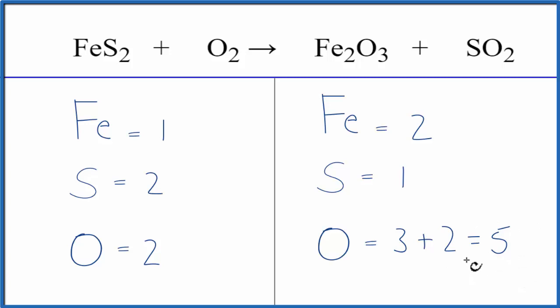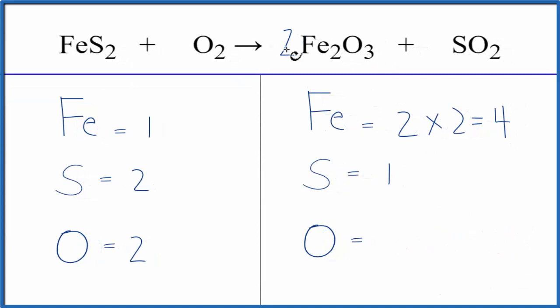When I have something like a five here, I want to get that to an even number. That will make it easier to balance the oxygens on this side. To do that, if I put a two in front of the iron oxide here, I'd have two times two for the irons, and then let's update the oxygens. So I have three times two, six oxygens, plus two oxygens. Now I have eight oxygens, so I can fix that,